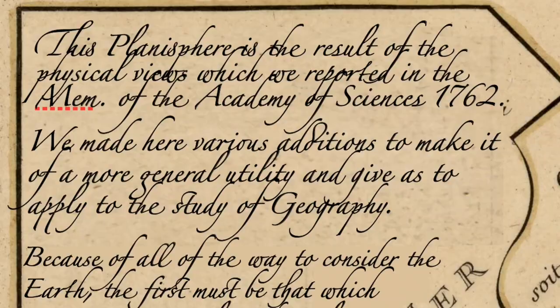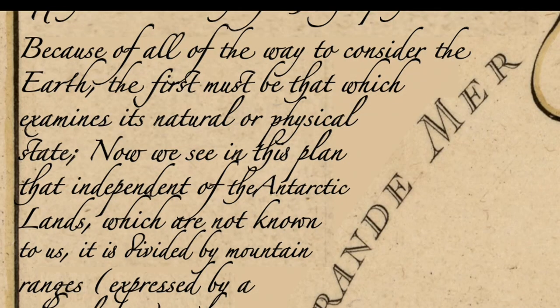This planisphere is the result of the physical views which we reported in the memoirs of the Academy of Sciences, 1762. We made here various additions to make it of a more general utility and give it to apply to the study of geography. Because of all of the ways to consider the Earth, the first must be that which examines its natural or physical state.